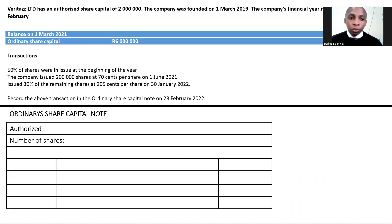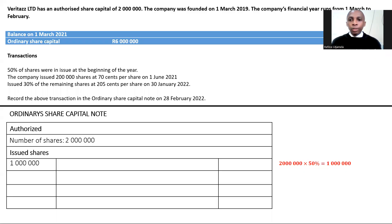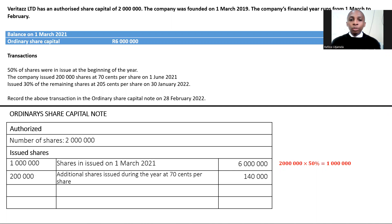Just to break it down: we had authorized shares of 2 million. 50 percent of those shares were issued at the beginning of the year - 50 percent of 2 million - which gave us a share capital amount of 6 million. That should be on the 1st of March 2021, not 2019. The share capital from that will be 6 million. We then issued 200,000 additional shares at 70 cents per share, giving us 140,000 rand.